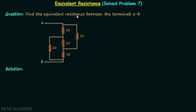Find the equivalent resistance between the terminals A and B. This is the given network — terminal A and terminal B. We are required to calculate the equivalent resistance between the terminals A and B. Now pause the video and analyze the given network.